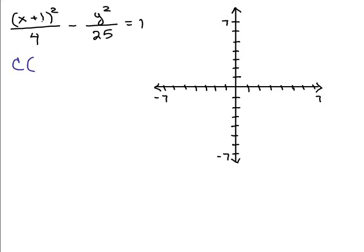Well, since we have X plus 1, the X coordinate will be negative 1. Now here I just have a Y squared so it'll just be 0. So the center of the hyperbola is right over here at negative 1, 0. Now that's not part of the hyperbola, it's sort of in the center.